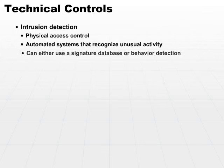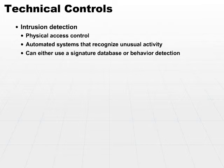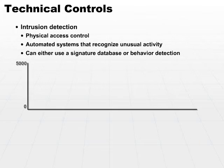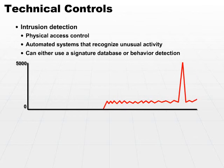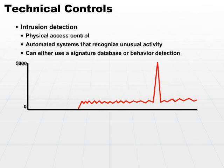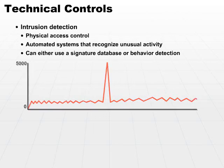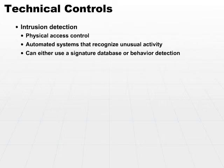The intrusion detection system can either use a signature database — if they see certain activity that matches an intrusion signature, they'll trigger the alarm. Or you can have intrusion detection systems that monitor behavior and realize: this particular port only gets about 300 hits an hour, and now I'm getting 4,500 hits this hour. Something's not quite right, so it triggers an alarm and asks a human to come look at it and figure out what's going on.